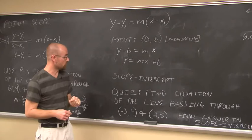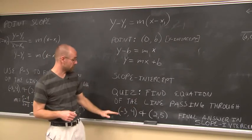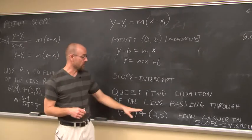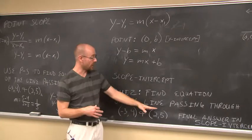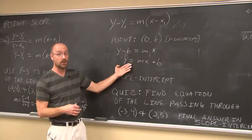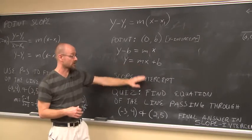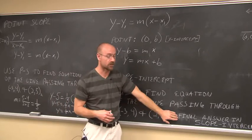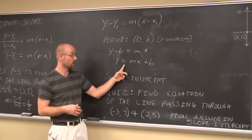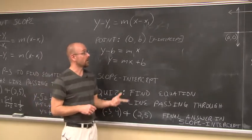Here's your quiz: find the equation of the line passing through the given two points, show your work, and use either the slope-intercept formula directly or use point-slope and simplify. Make sure your final answer is in slope-intercept form.